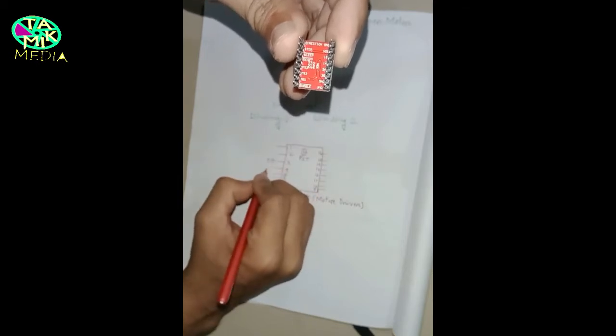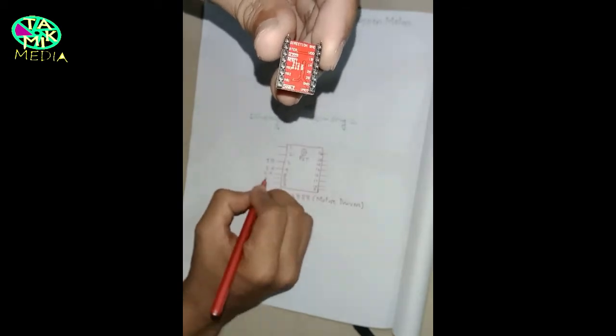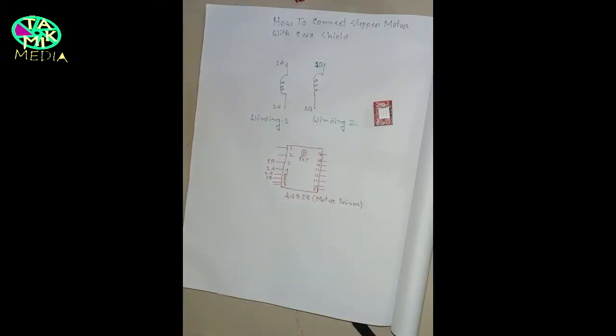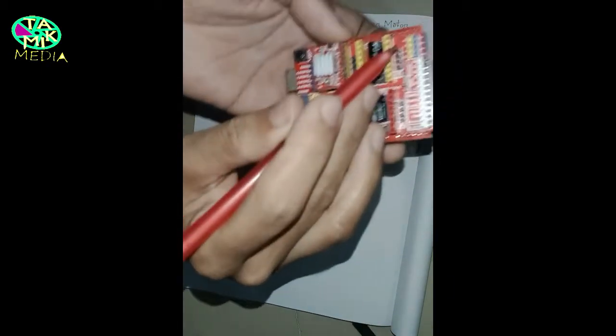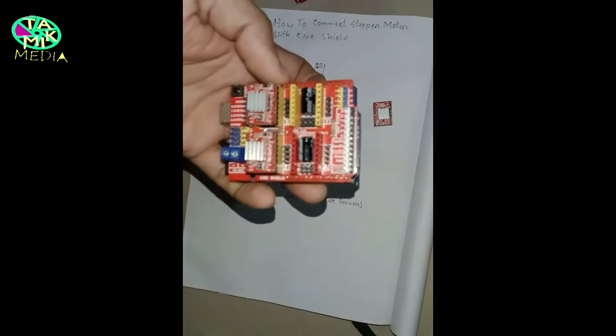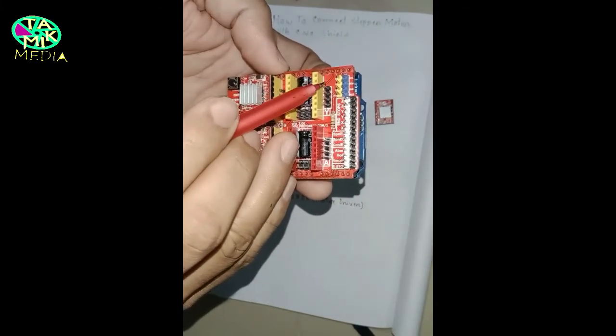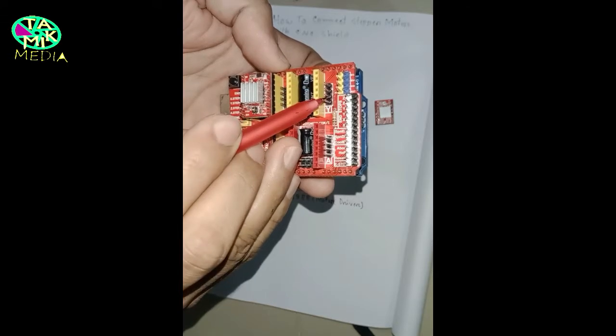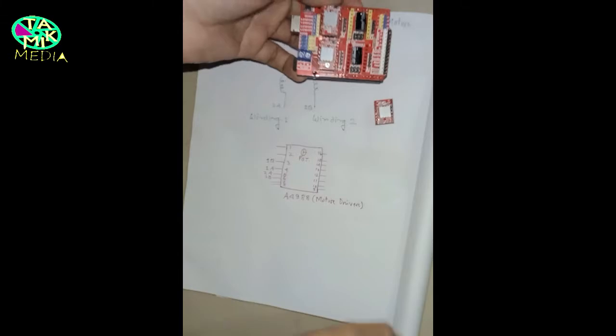They should be here. Now I'll show you how to identify the 1A, 2A and 1B, 2B pins from CNC shield. Here is nothing written on CNC shield about the stepper motor's pins.